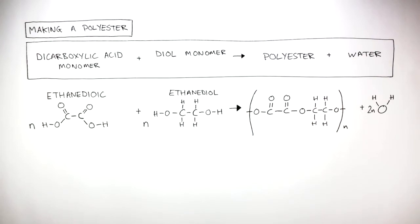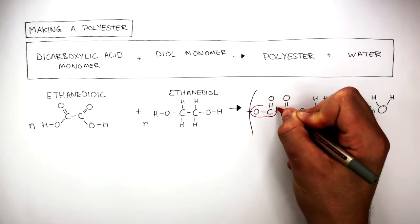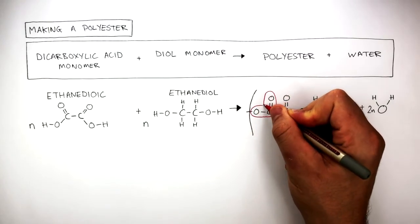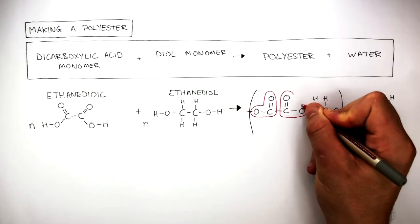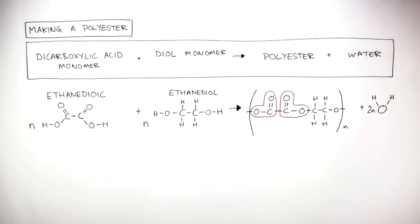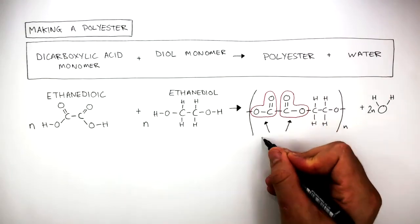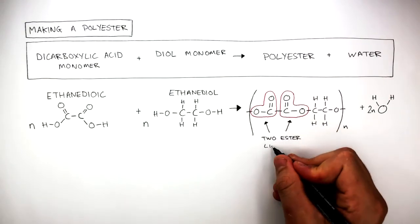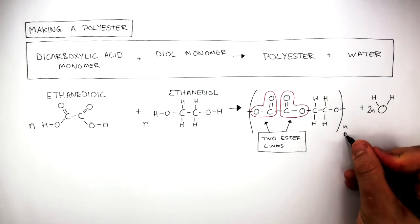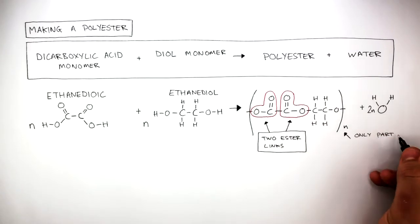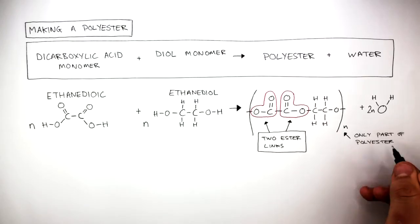In this repeating unit, here I'm drawing around one ester link in the chain, and here I'm drawing around another ester link in the chain. These are two ester links next to each other. It's important to understand that this repeating unit shows only part of the polyester chain.